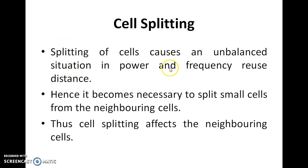Splitting of a cell causes an unbalanced situation in power and frequency reuse distance. This is a disadvantage. Hence, it becomes necessary to split small cells from the neighboring cells as well. When this unbalanced situation occurs, we split bigger cells into smaller cells from the neighboring cells. So cell splitting not only affects the original cell but it also affects the neighboring cells.